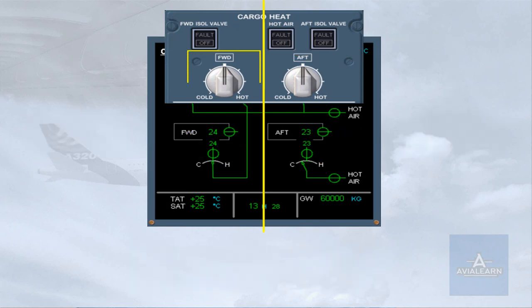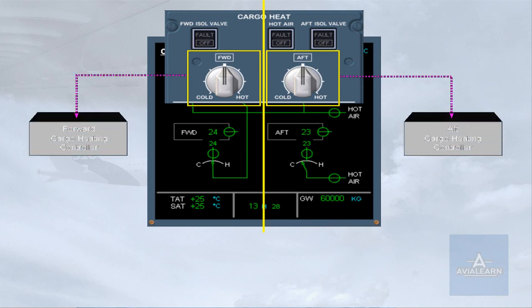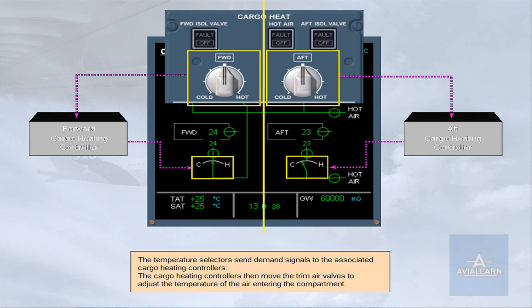The temperature selectors send demand signals to the associated cargo heating controllers. The cargo heating controllers then move the trim air valves to adjust the temperature of the air entering the compartment.